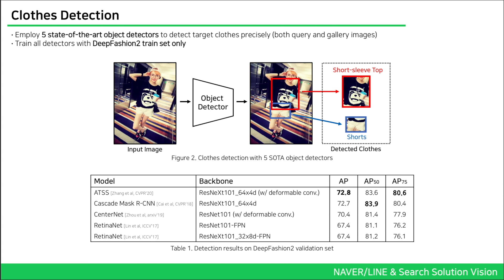As shown in Figure 2, for a given image, our system first detects cloth items on the image with detection models. To detect target cloth precisely, we employ five state-of-the-art detectors, which are ATSS, Cascade Mask RCNN, CenterNet, and two Retina Nets with different backbones.